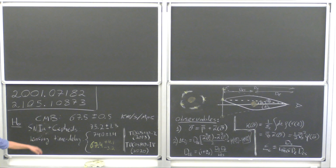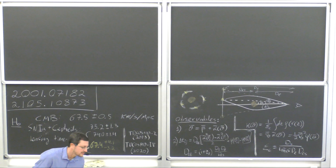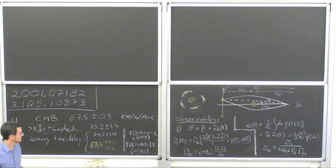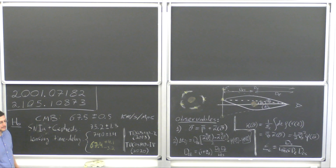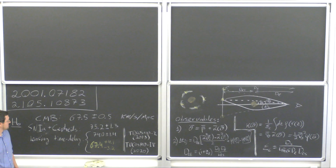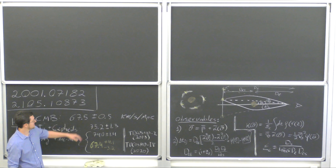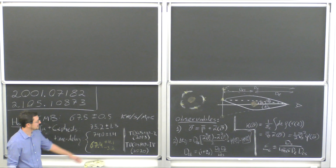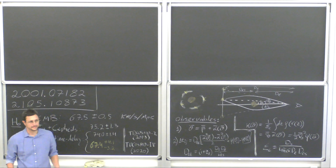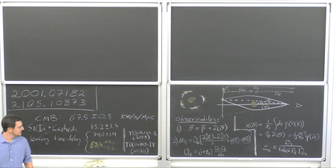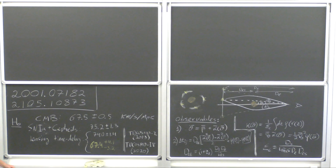Just to summarize the status of the H0 tension recently — as you all know, we have from Planck 18 and also from galaxy clustering, a measurement of H0 that is called the early measurement, which is around 67 kilometers per second per megaparsec.